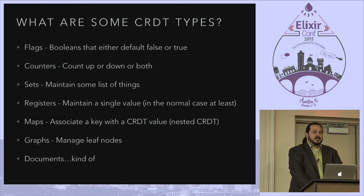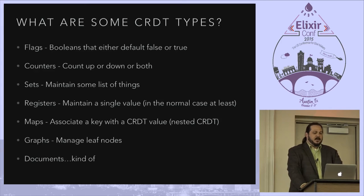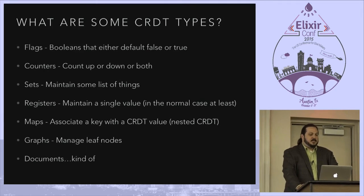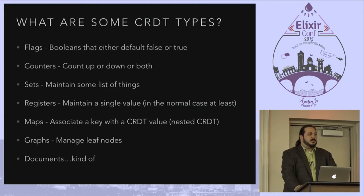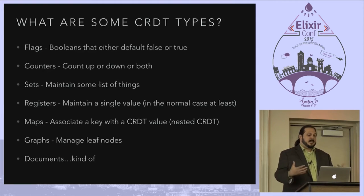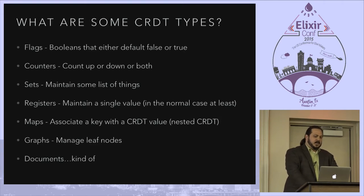There are also graphs to help manage a graph system, though the semantics for those get kind of wonky in some cases. And there are also CRDT documents, though I would not look at using them at all. The storage requirements involved are often 10 times or more — for collaborative editing they end up being 10 times more than the actual space to store the document, and it can get even worse if there's a lot of concurrency.